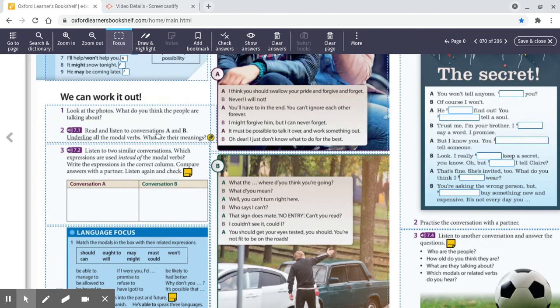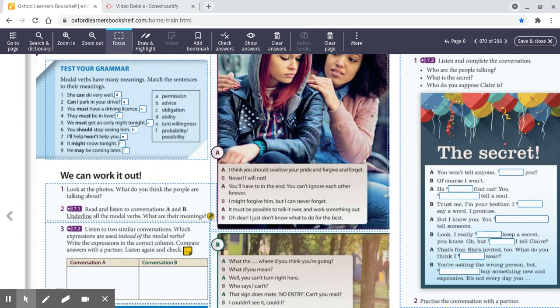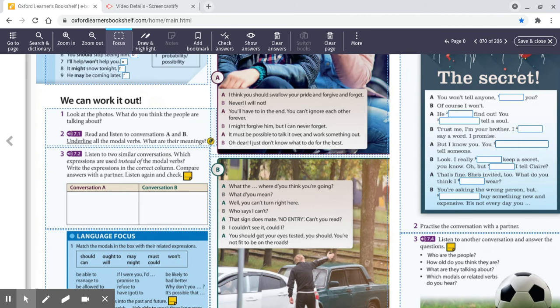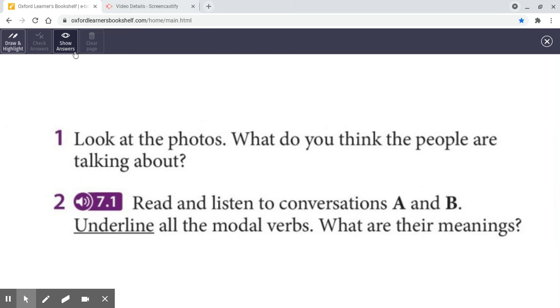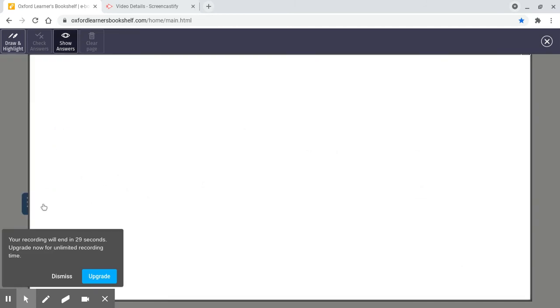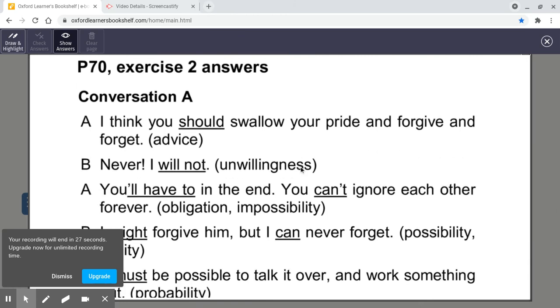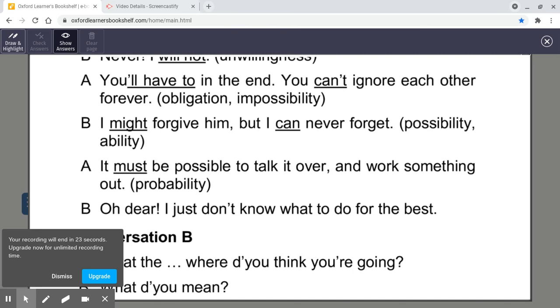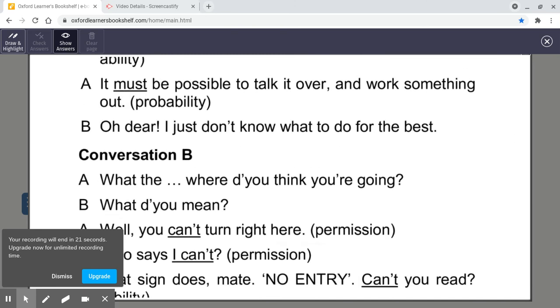Read and listen to the conversations A and B and underline those modal verbs. So the nine that exist along here. And what are the meanings of them? OK. And I'm going to put up the answers in five, four, three, two, one. Here they come. You should swallow your pride. I will not. You'll have to. You can't. I might. I can. It must.